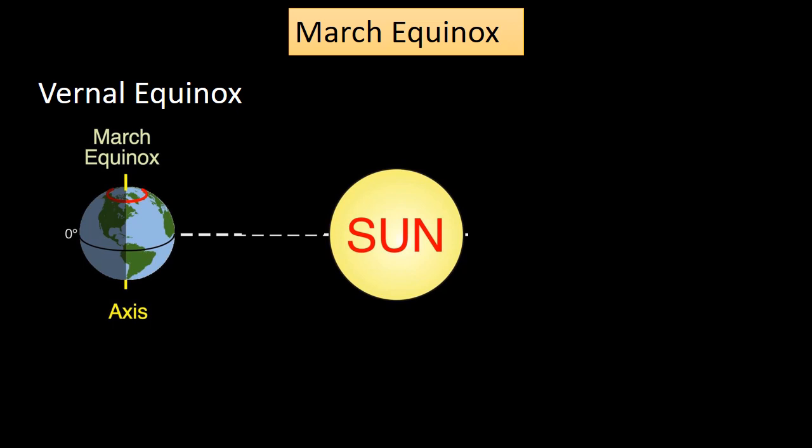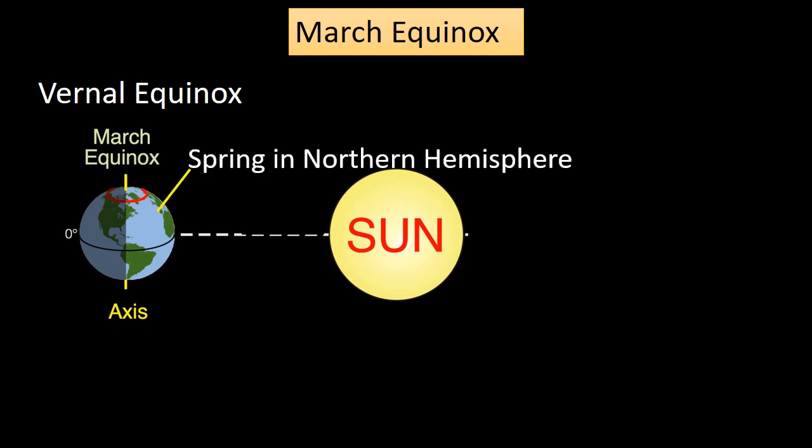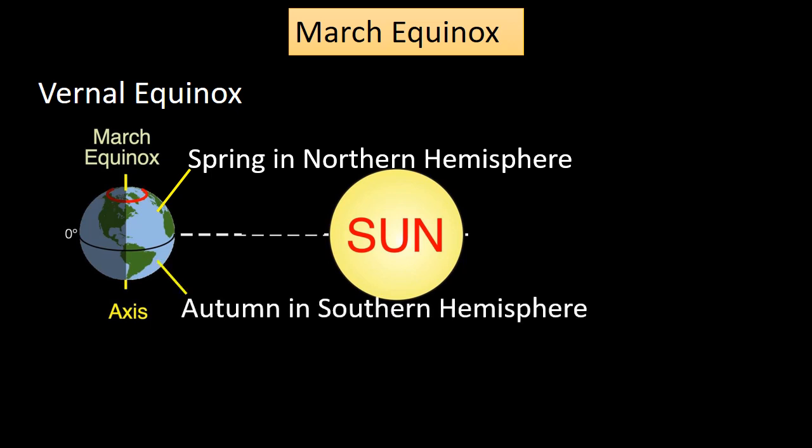This results in equal amounts of daylight and darkness for all parts of the Earth. The March equinox usually occurs on March 20th or 21st and marks the beginning of spring in the Northern Hemisphere and autumn in the Southern Hemisphere.